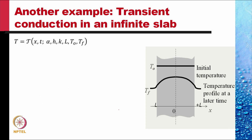Temperature T is a function of x and t (independent variables) and α, h, k, L, T₀, and Tf (the independent parameters). We normalize the variables: x* = x/L, where L is the half-thickness, and t* = t/τ, where τ is some characteristic time yet to be determined. An important simplifying feature of heat transfer problems is that only temperature differences matter, not the absolute temperature. So we define θ = T − Tf and normalize it.